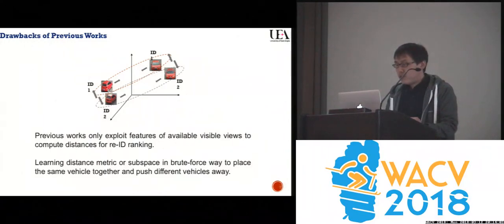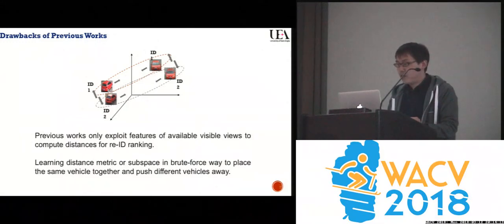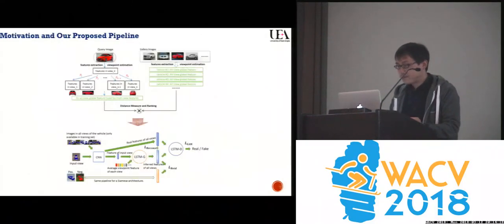We think that minimizing the distance between the side and front views of the same vehicle and pushing away that of two similar vehicles both in the front view will confuse a model optimized without a correct and converging loss.